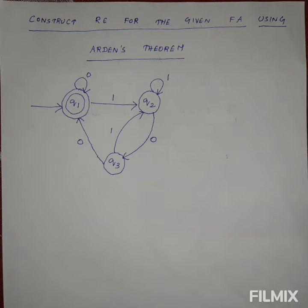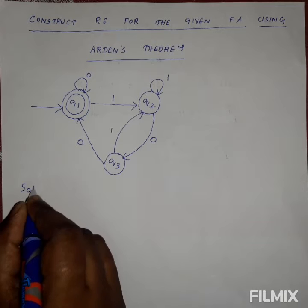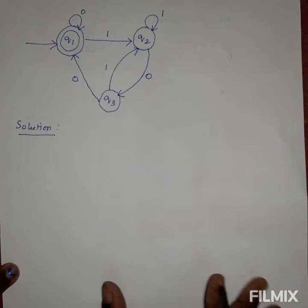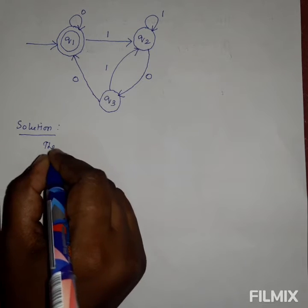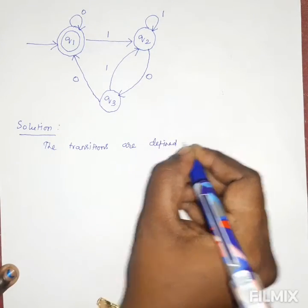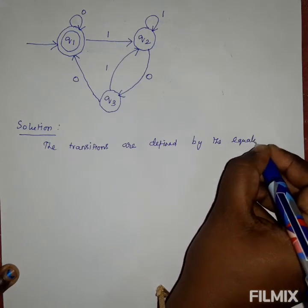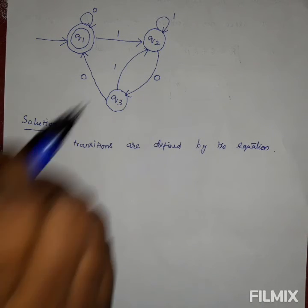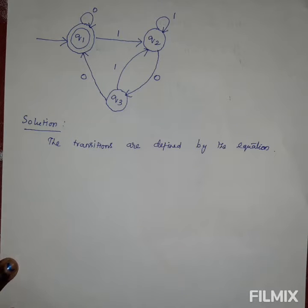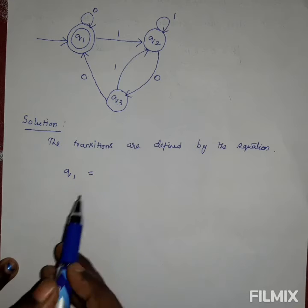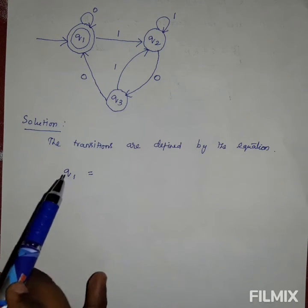We are using Arden's theorem — the above two equations — to construct the regular expressions from this finite automata. In the first step, we are writing the transitions defined by the equations. We are going to write a separate equation for each and every individual state present in the finite automata. Let us take the initial state q1.